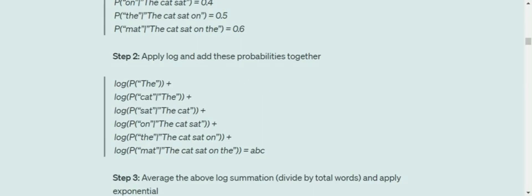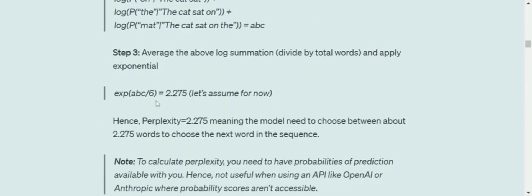Apply log on the individual probabilities from the model, then add them together. Then apply exponential dividing by the total number of words in the sentence. Assume the value comes out to 2.275. Hence perplexity is 2.275, meaning the model needs to choose between about 2.275 words to choose the next word in the sequence.